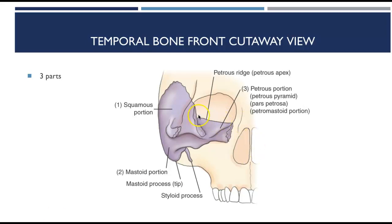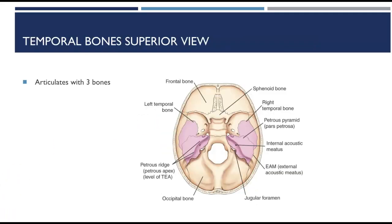The upper border of the petrous pyramids are called the petrous ridges. We will be talking a lot about petrous ridges when we do positioning of both the skull and the facial bones, so keep that in mind as we move forward. In a cutout view of the temporal bone, the internal acoustic meatus is notable — it serves to transmit the nerves of hearing and balance.